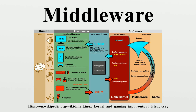The term is most commonly used for software that enables communication and management of data in distributed applications. In this more specific sense, middleware can be described as the dashing client server, or the two in peer-to-peer. Object web defines middleware as the software layer that lies between the operating system and applications on each side of a distributed computing system in a network.